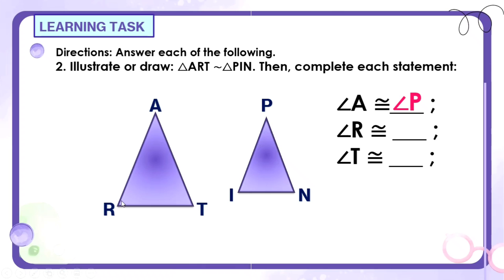Yung angle R naman, yung angle na to, nasan kaya ang kapareho niyang angle dito sa triangle na to? Angle I. And yung angle T is angle N. Angle T is congruent to angle N.